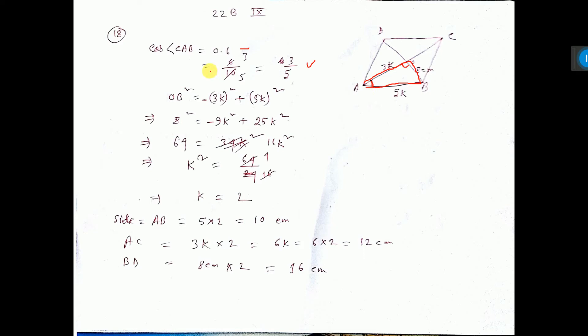Now since cos theta is equal to base by hypotenuse. So which one is base? Base means here 3. Since this is the angle and right angle is opposite, this is hypotenuse.